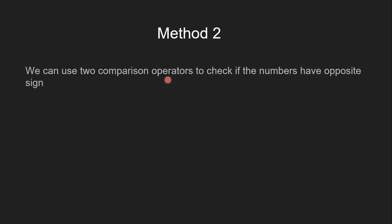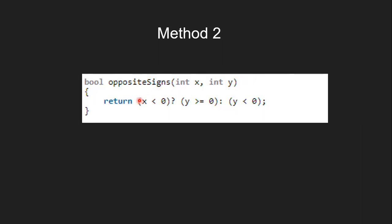Let's see the second method. Here we use two comparison operators to check if the numbers have opposite signs. In the return statement, the whole expression uses a ternary operator with three expressions. We first evaluate expression 1; if it is true, we evaluate expression 2; if expression 1 is false, we evaluate expression 3.